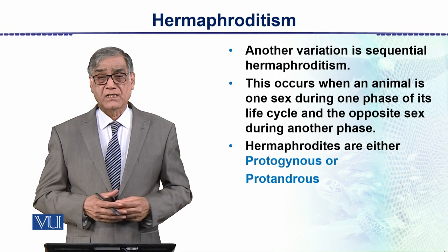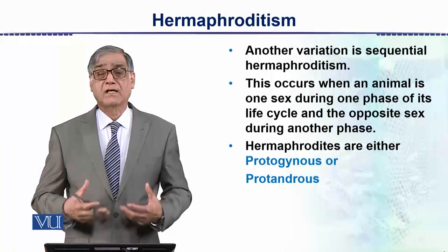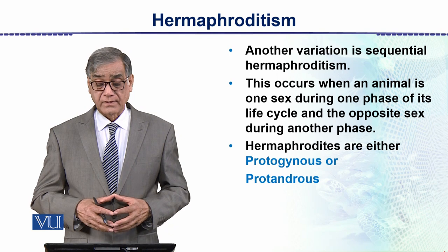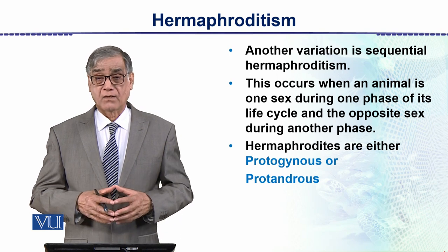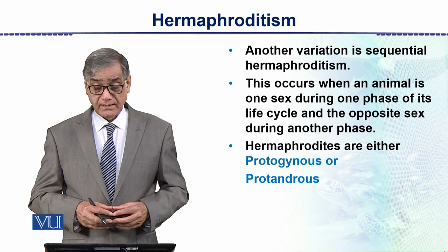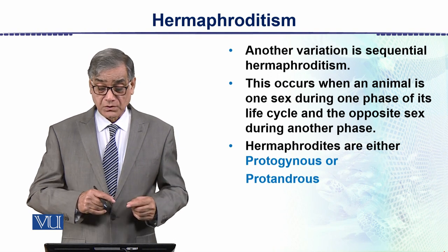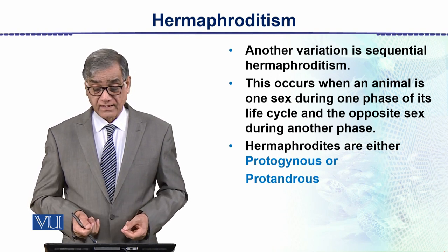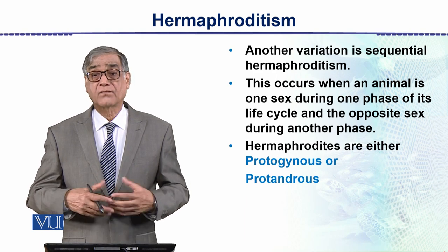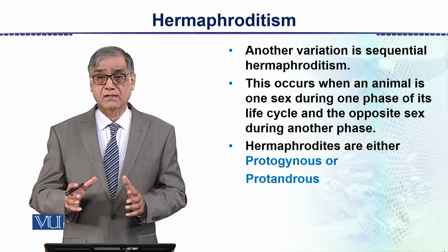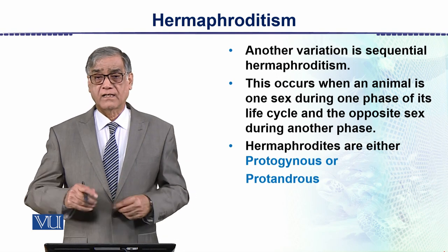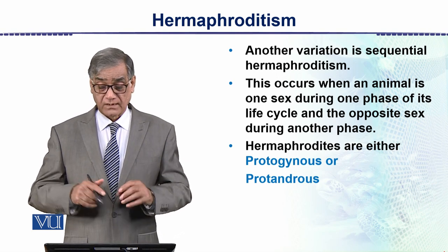Another variation within hermaphroditism is sequential hermaphroditism. This occurs when an animal is one sex during one phase of the life cycle and the opposite sex during another phase. In early conditions, the animal is one sex, but later they change their sex into the other one.